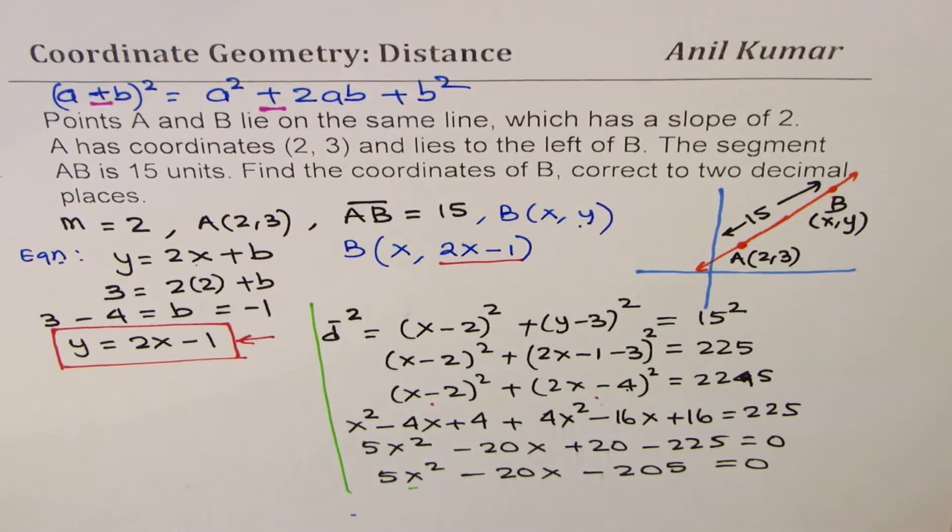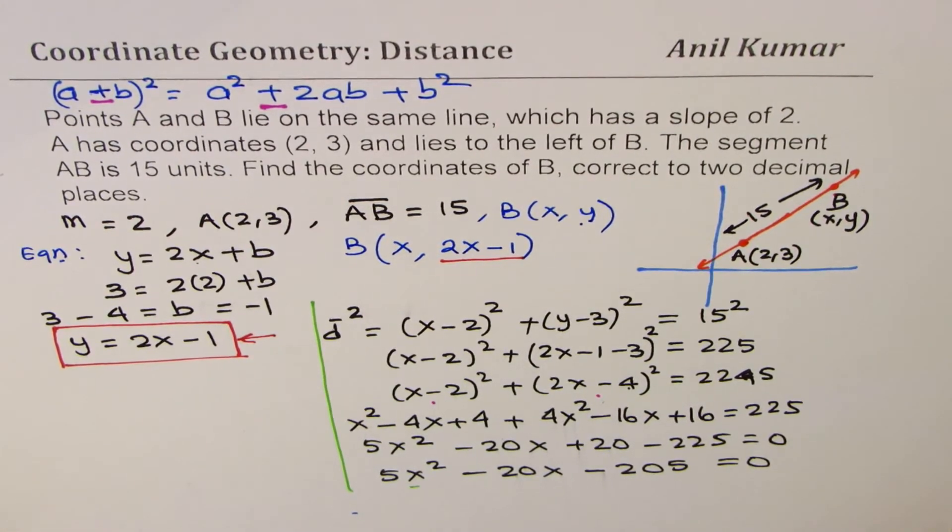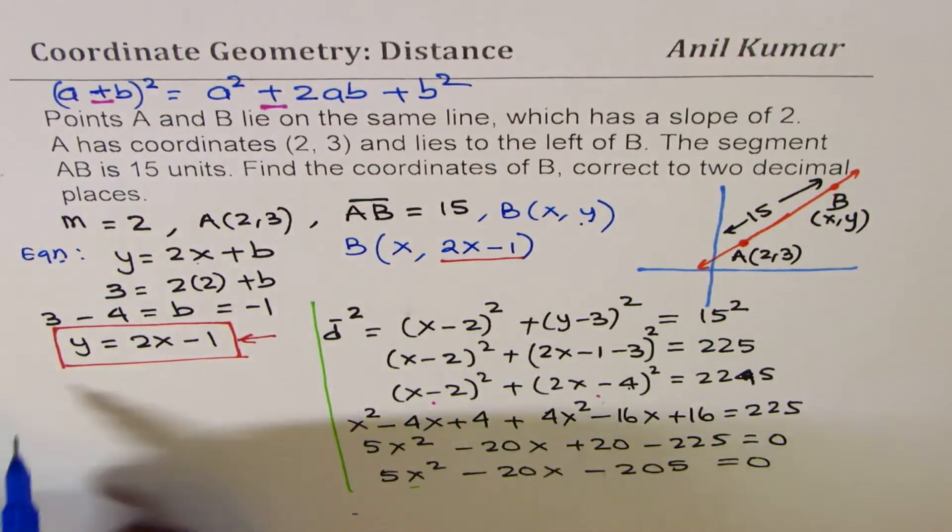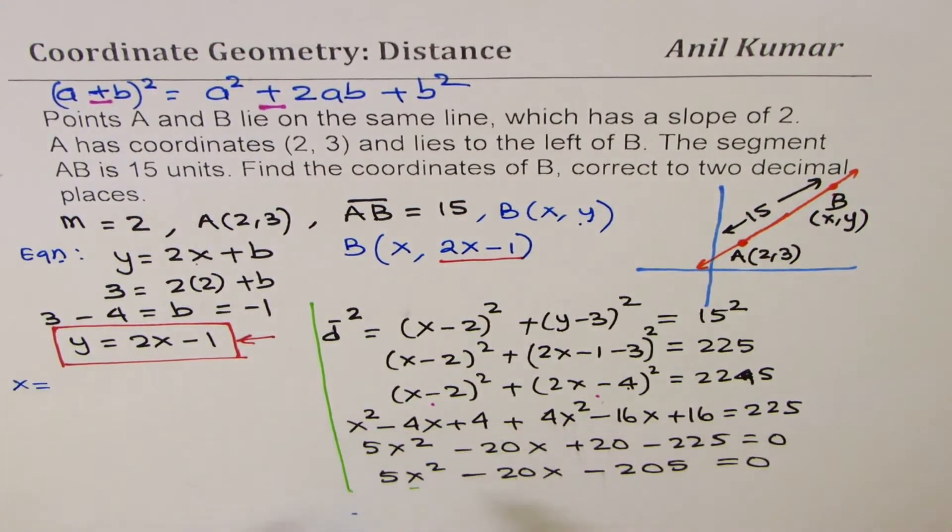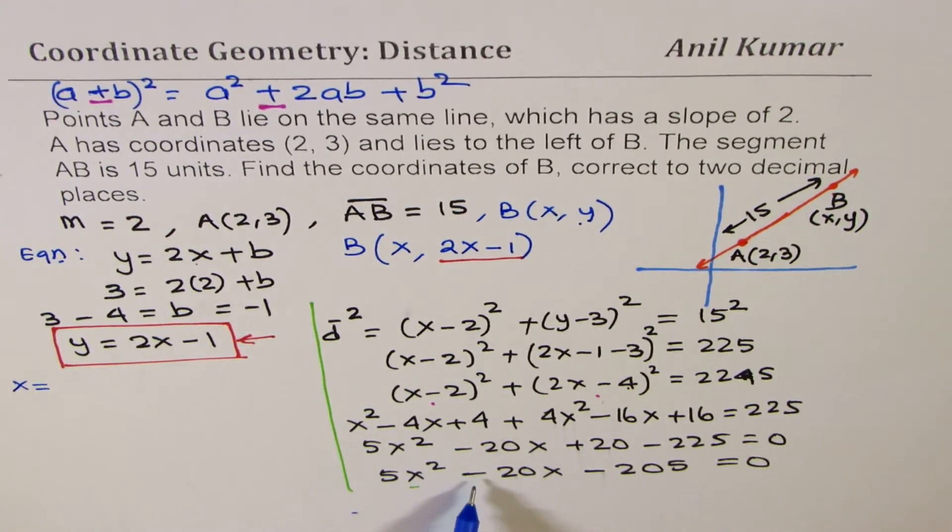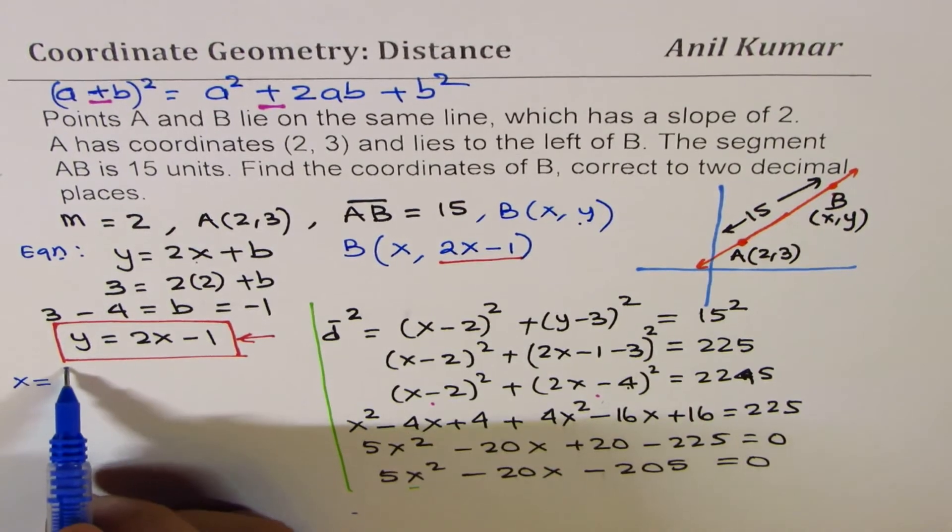So, we will use quadratic formula and solve for x. Let me use the space on the left side. So, we can say x equals. Quadratic formula is -b, which is minus of -20. So, we get 20 here.